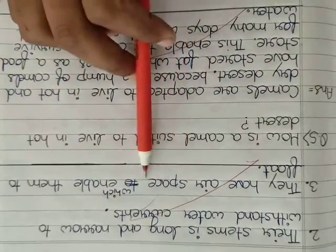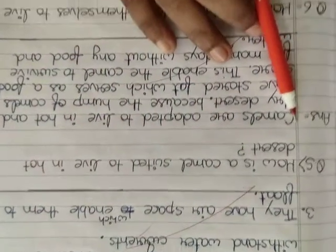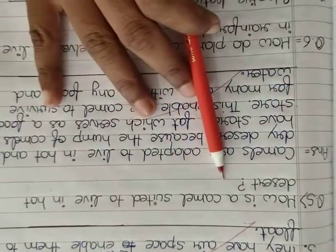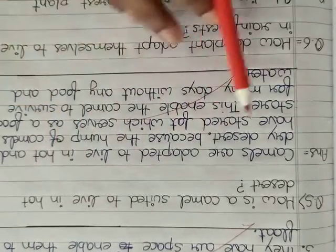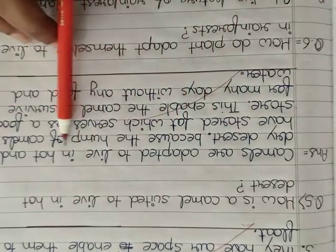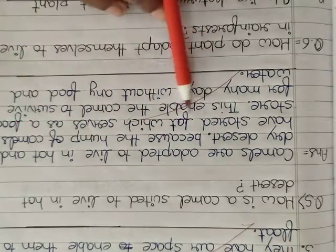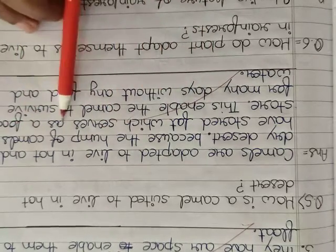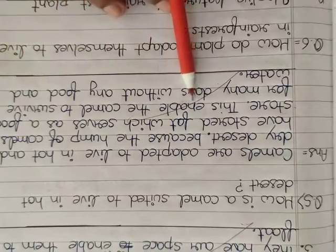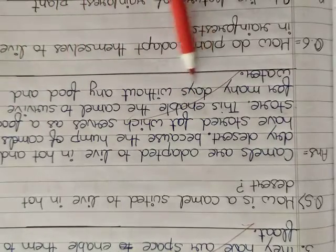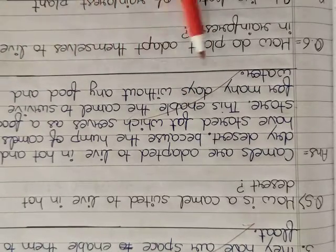Next is How is a camel suited to live in hot desert? Camels are adapted to live in hot and dry desert because the hump of camels have stored fat which serves as a food store. This enables the camel to survive for many days without any food and water.